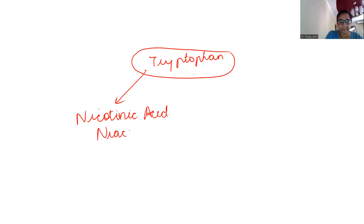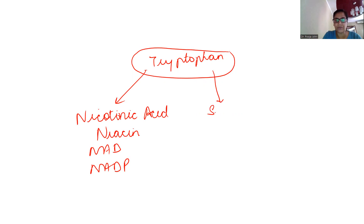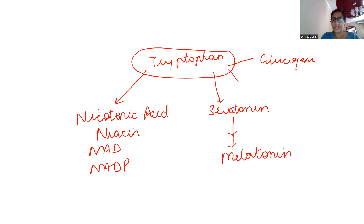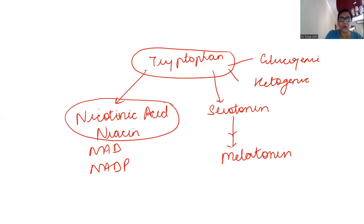Niacin is the most powerful reductant present in all biological reactions, forming NAD and NADH. Tryptophan is also required for the synthesis of serotonin, which is a very important vasoconstrictor in the body. Serotonin is required for the synthesis of melatonin, the hormone secreted by the pineal gland, required for the diurnal rhythm — the sleep and awake process.